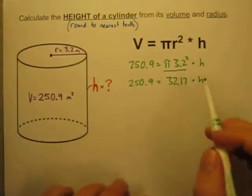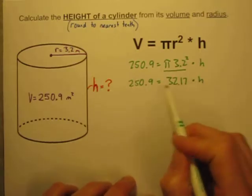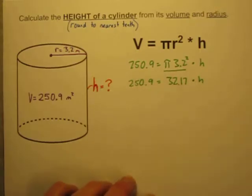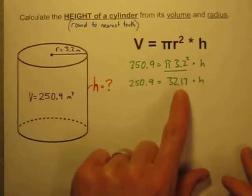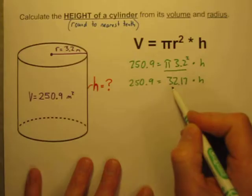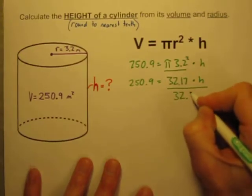So now I know the height, whatever it is, multiplied by 32.17 is equal to 250.9. Well how do I solve for what the height has to be? How do I get rid of this times 32.17? Let's do the opposite of it. Let's divide by 32.17.